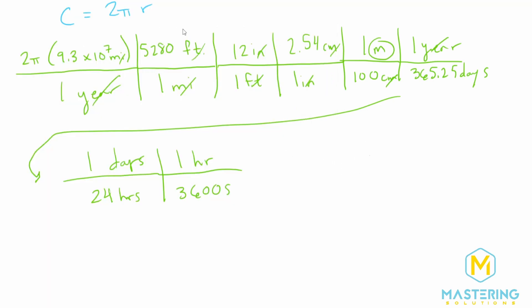So we have 2.98 times 10 to the 4 meters per second. The days canceled, hours canceled, and we're left with meters per second. So the speed of the earth moving around the sun is 2.98 times 10 to the 4 meters per second.